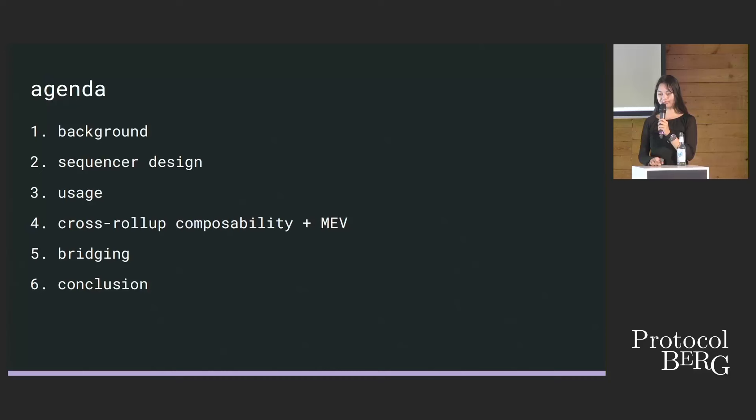I'm going to go pretty fast because I have a lot of content, but feel free to ask questions if there's time at the end. So first I'm just going to talk about background — what rollups are and that kind of thing — then sequencer design, usage in a rollup, cross-rollup composability and MEV, bridging, and inclusion.